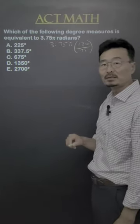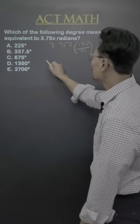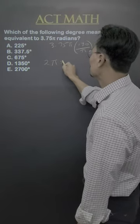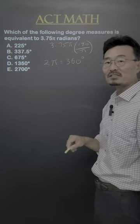However, here's a quicker way without a calculator. Since we know, or should know, that 2 pi is 360 degrees,